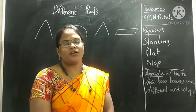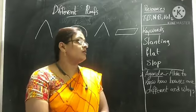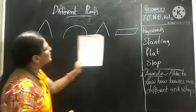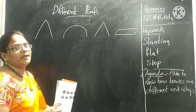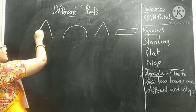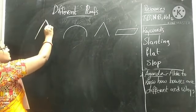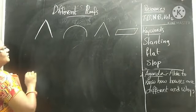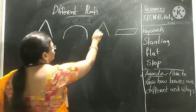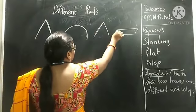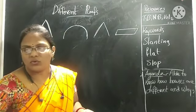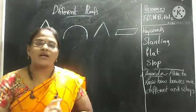But they have different types of roofs. Why? See here, it is like a slanting line, it is like round, again it is also slanting line and it is flat. We have different types of roofs for different types of houses.